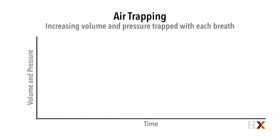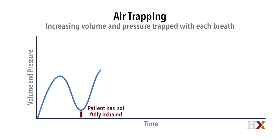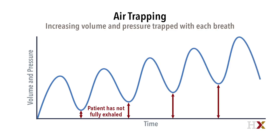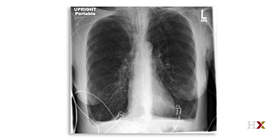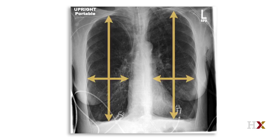Another key concept is air trapping, a major problem for many patients on the ventilator. The concept is that when a patient is exhaling, they have not fully exhaled when the next breath comes. Over time, that pressure and volume will accumulate within the respiratory system, leading to increasing distension, increasing pressure, and significant hemodynamic and respiratory compromise. This patient has bad COPD — her lungs are very expanded, her diaphragms are flattened, and you can even see her mediastinum is relatively small and compressed due to all of that trapped air and air pressure within her intrathoracic cavity.